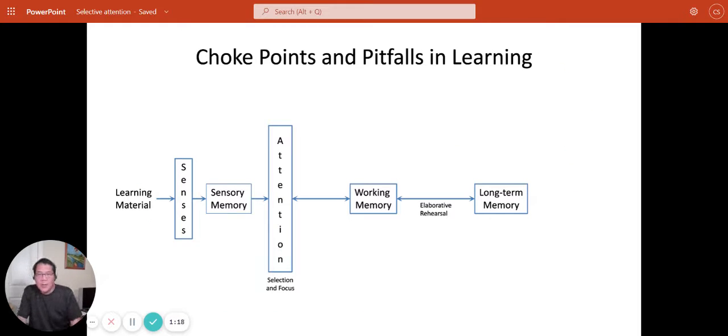Let's take a look at how this fits into the overall memory system. We start with this simplified model of learning materials out in the environment. It all goes in through the senses, held in sensory memory. And then here we have attention. Attention selects information for further processing. We select what's relevant and filter out everything that's irrelevant, and allows us to focus and concentrate on information.